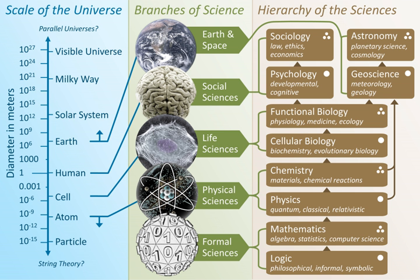Over the last two millennia, physics was a part of natural philosophy along with chemistry, certain branches of mathematics, and biology, but during the scientific revolution in the 16th century, the natural sciences emerged as unique research programs in their own right. Certain research areas are interdisciplinary, such as biophysics and quantum chemistry, which means that the boundaries of physics are not rigidly defined. In the 19th and 20th centuries, physicalism emerged as a major unifying feature of the philosophy of science, as physics provides fundamental explanations for every observed natural phenomenon. New ideas in physics often explain the fundamental mechanisms of other sciences, while opening new research areas in mathematics and philosophy.